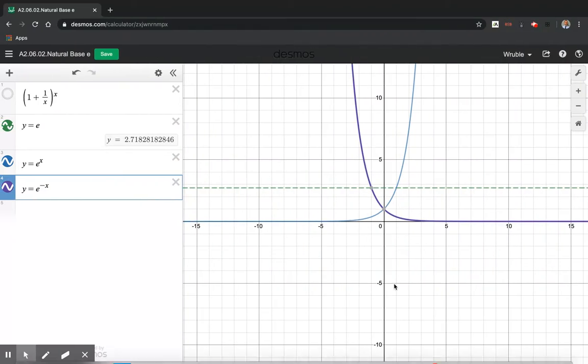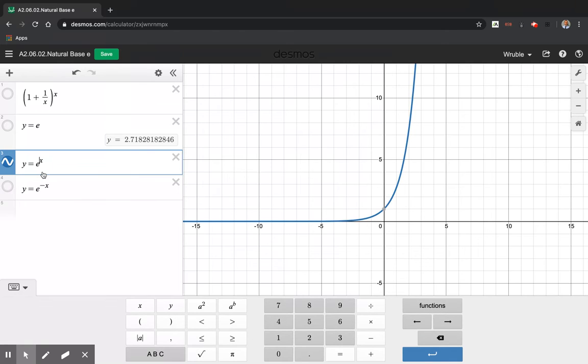Then we can graph it in the software. If we shut this one off and shut this one off, and we enter e to the 0.5x... we can see the curve, oh, and then there was a 2 in there as well.